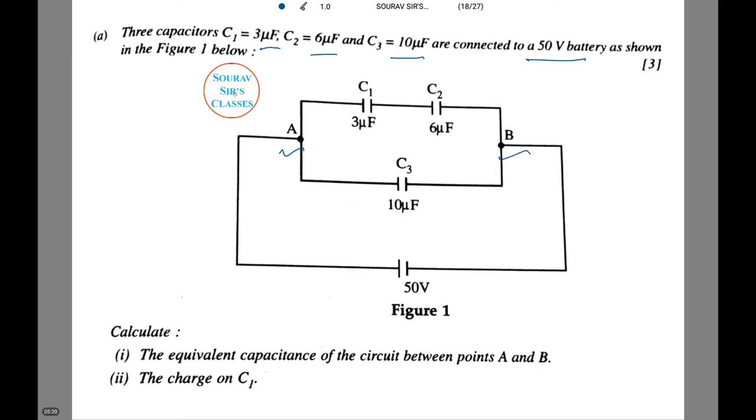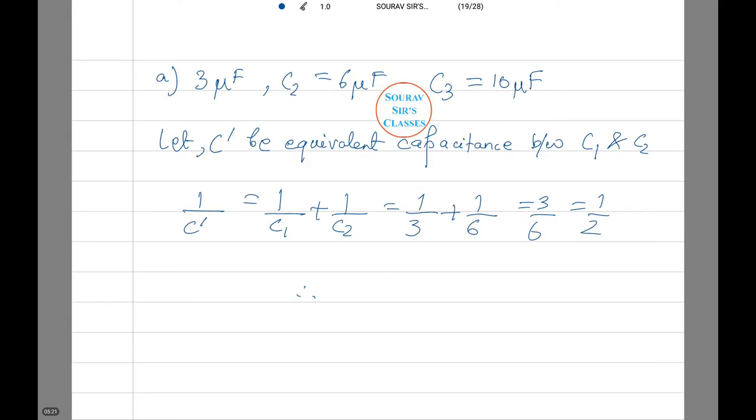Now, we need to calculate the equivalent capacitance of the circuit between points A and B. Let's see how to do this. We have written the information that was given to us. That is, the three capacitances.